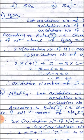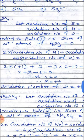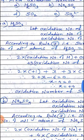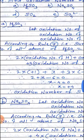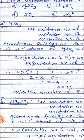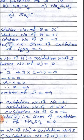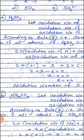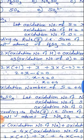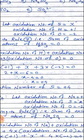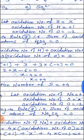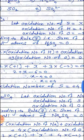From this, we make the equation: 2 into (oxidation number of hydrogen) plus oxidation number of S plus 3 into (oxidation number of oxygen) equal to 0. Substituting values: 2 into (+1) plus x plus 3 into (−2) equals 0. So 2 plus x minus 6 equals 0, giving x minus 4 equals 0.